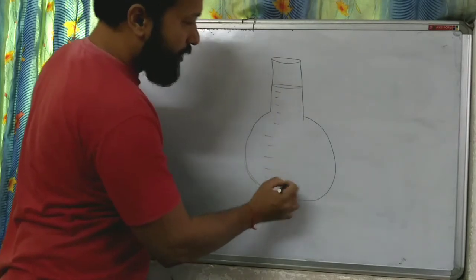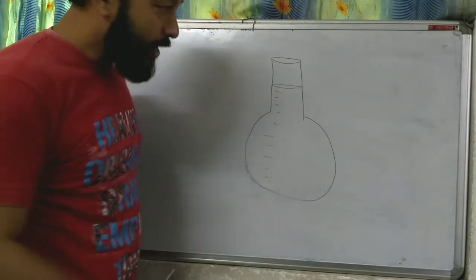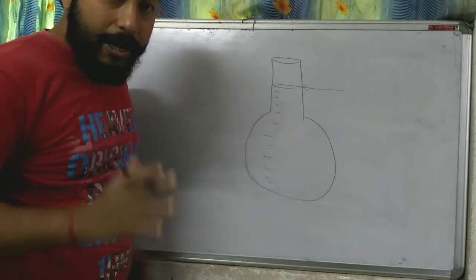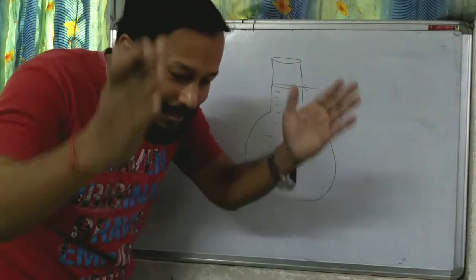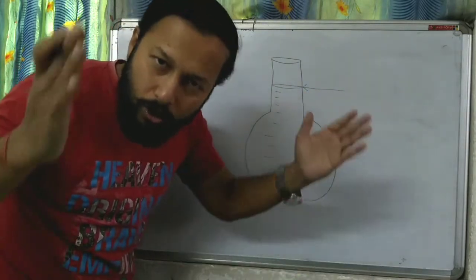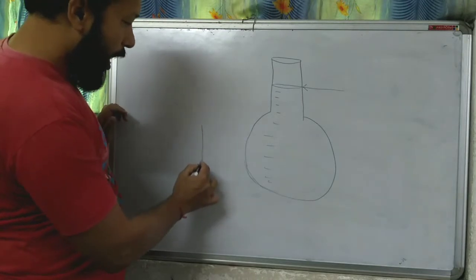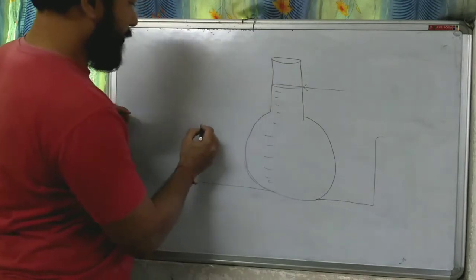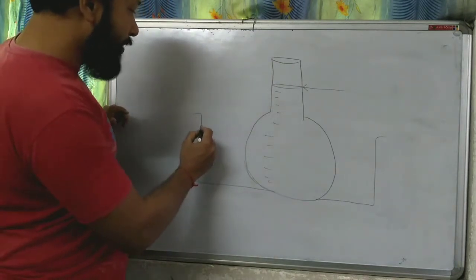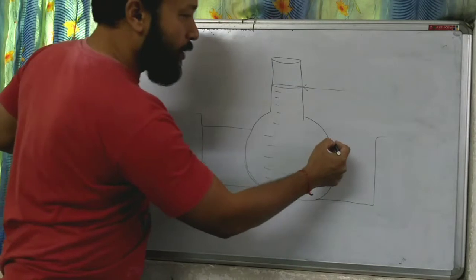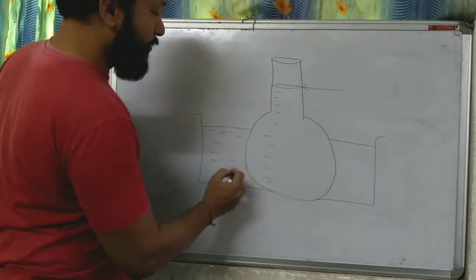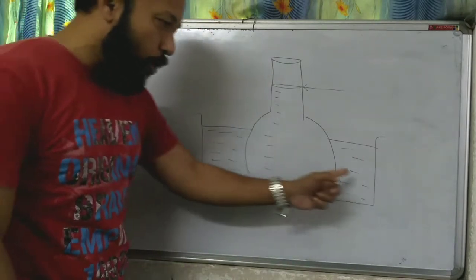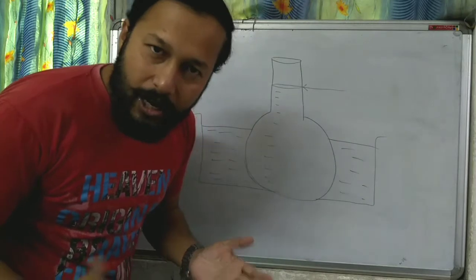This is the liquid, and I am filling it up to this mark. Now I am placing the whole flask inside another bowl, placing it like this, and filling that bowl with water or any other liquid.